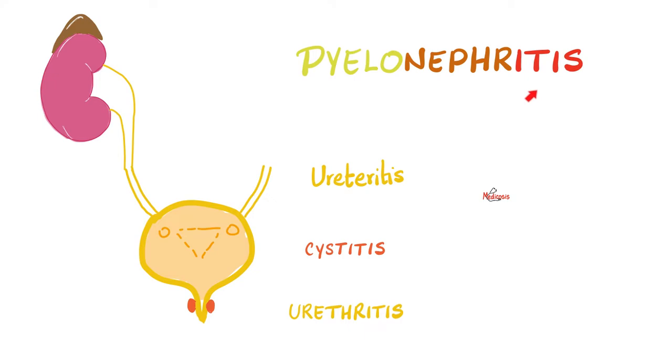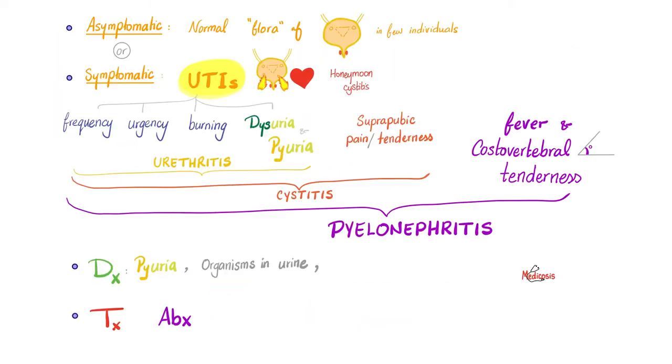Acute inflammation — itis. The cardinal signs are redness, hotness, swelling, pain, and loss of function — in Latin: rubor, calor, tumor, dolor, functio laesa.